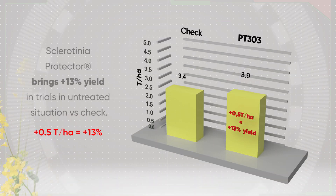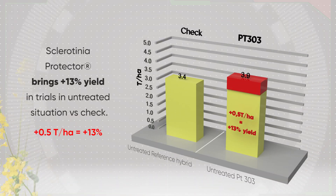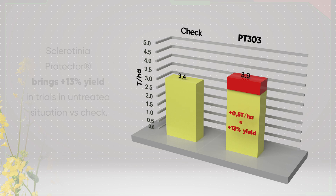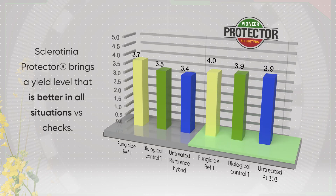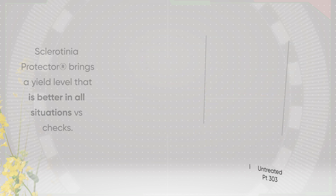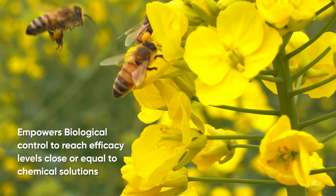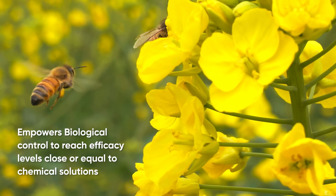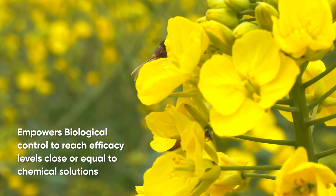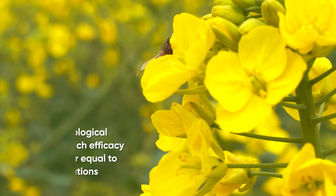Trials show that Sclerotinia Protector brings a plus 13% yield in untreated situations versus the check. Sclerotinia Protector brings a yield level that is better in all situations versus checks — better even if checks were treated on optimal timing with best-in-class fungicide. This empowers biological control to reach efficacy levels close or equal to chemical solutions.